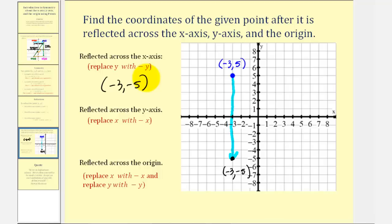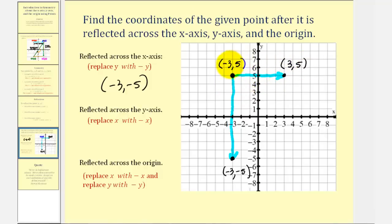To reflect the given point across the y-axis, or across the vertical axis, the point would go from here to here. Notice how the coordinates of the point would now be three, comma five. So when reflecting across the y-axis, notice how we change the sign of the x-coordinate and left the y-coordinate the same, which is what our notes say — replacing x with negative x. So for the reflection across the y-axis, the new coordinates would be three, comma five.